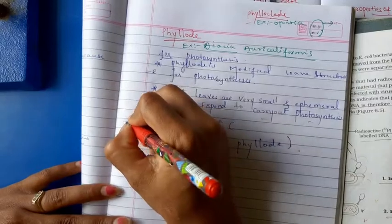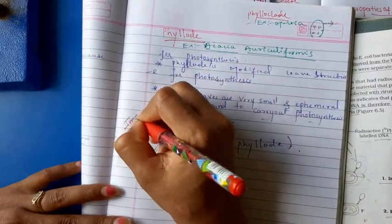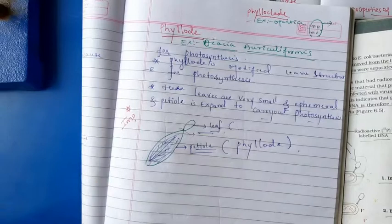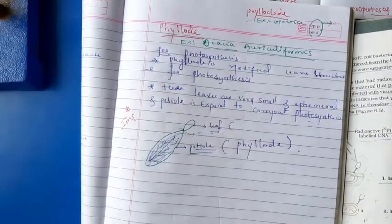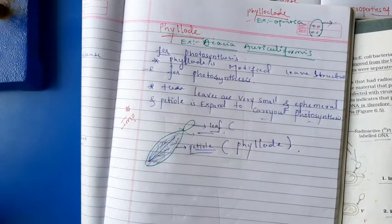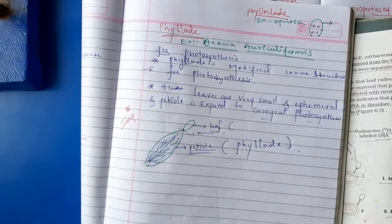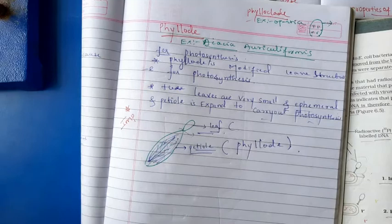Here I will mention this as an important modification with a star. Phyllode, example Acacia auriculiformis — here the petiole is very broad and expanded to carry out photosynthesis, but the leaf size is very small and ephemeral.